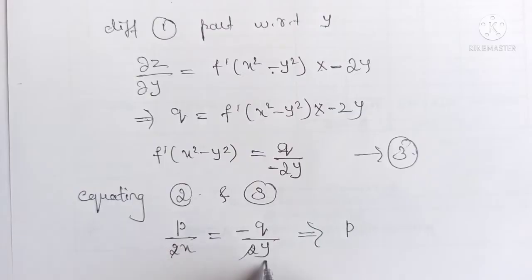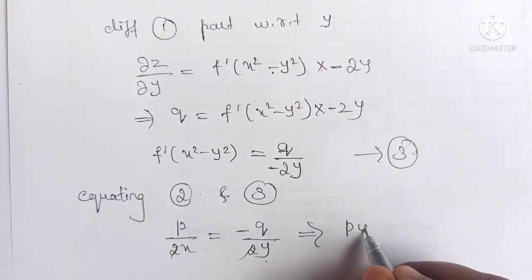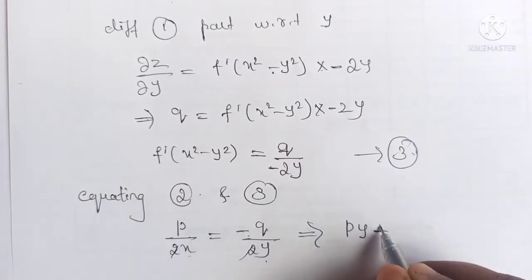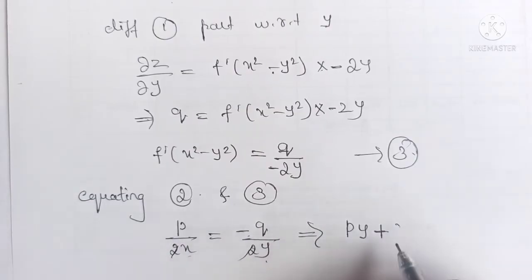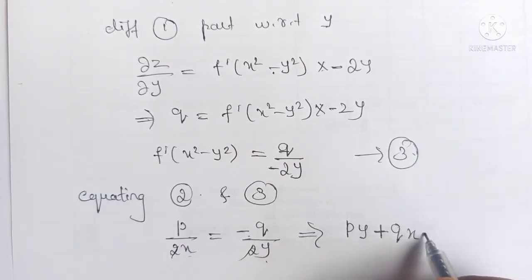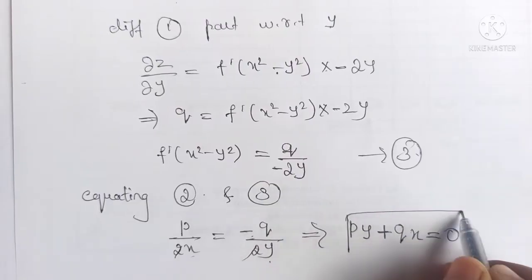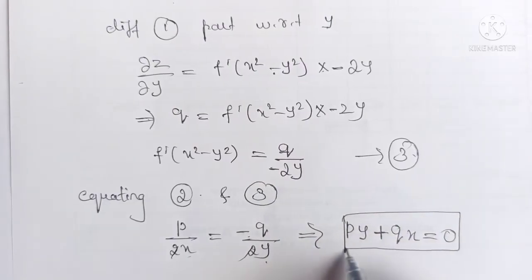The 2s cancel and rearranging, taking everything to the LHS, we get py + qx equals 0. This is the required PDE.